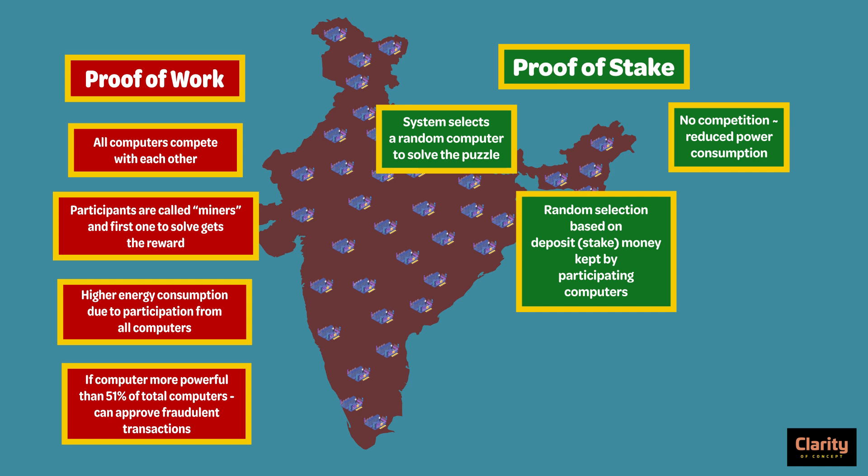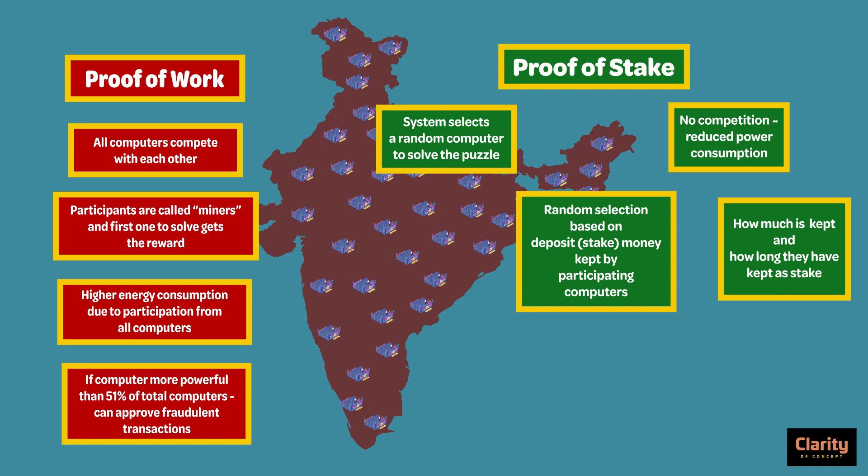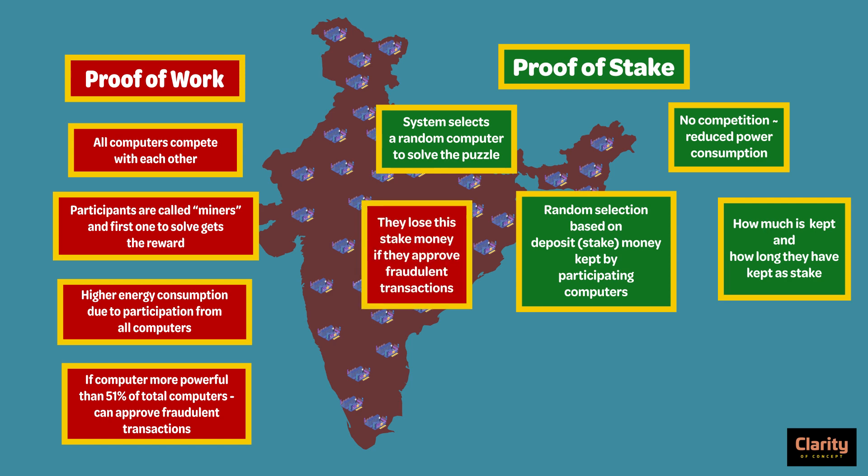For example, one node may keep a deposit of 10 bitcoins, another may keep 200 bitcoins as stake, or even 0.5 bitcoins as stake. The system also considers how long they have kept this deposit stake money. Based on all these factors and a few more, the system randomly selects a computer node, making the system efficient. If any computer node validates a fraudulent transaction block, they lose this stake money as a penalty.